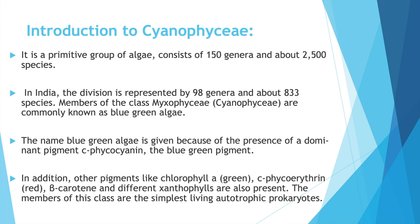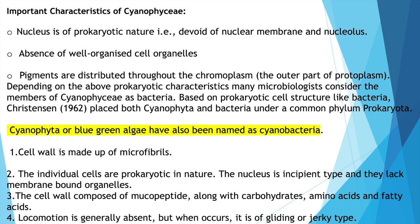The members of this class are the simplest living autotrophic prokaryotes. In Cyanophyceae, the nucleus is prokaryotic in nature — it is devoid of nuclear membrane and nucleolus. There is an absence of well-organized cell organelles, and pigments are distributed throughout the chromoplasm, which is the outer part of the protoplasm. Based on these prokaryotic characteristics, Christensen in 1962 placed both Cyanophyceae and bacteria under a common phylum known as Prokaryota.